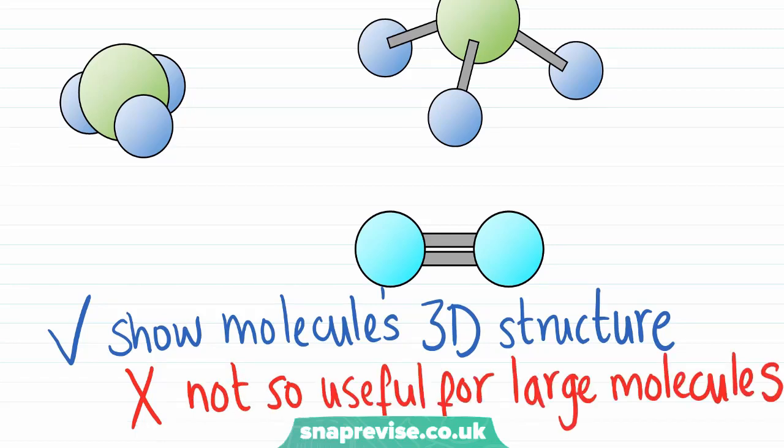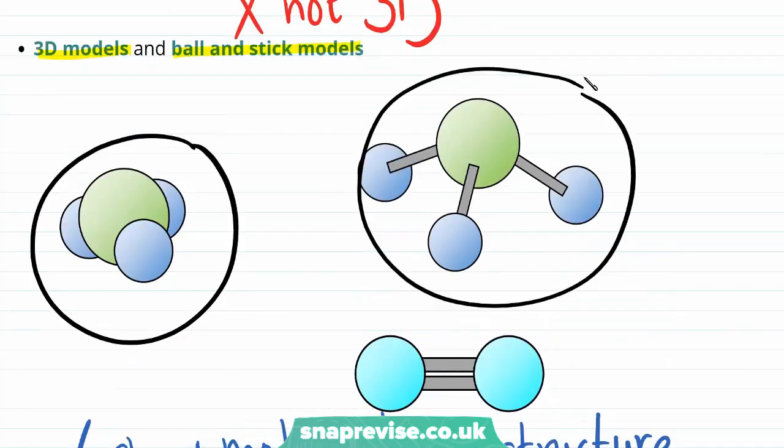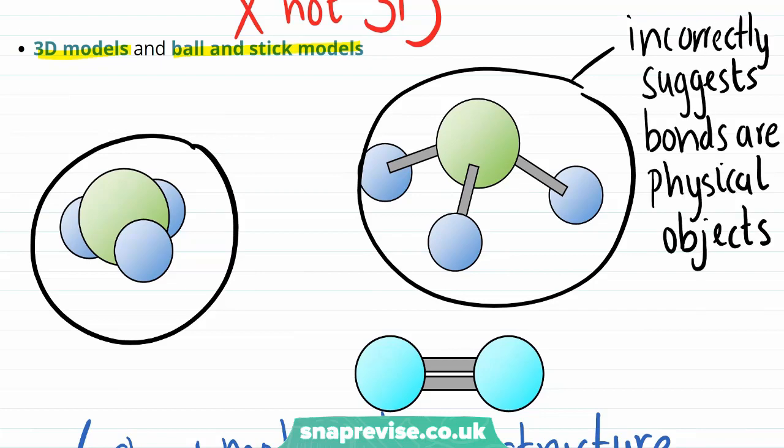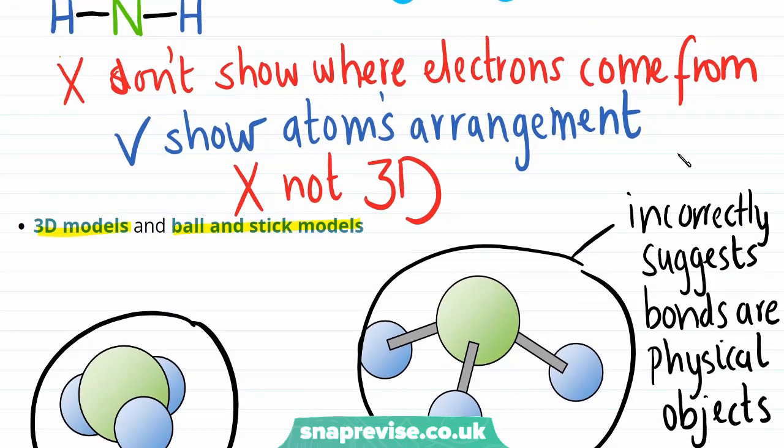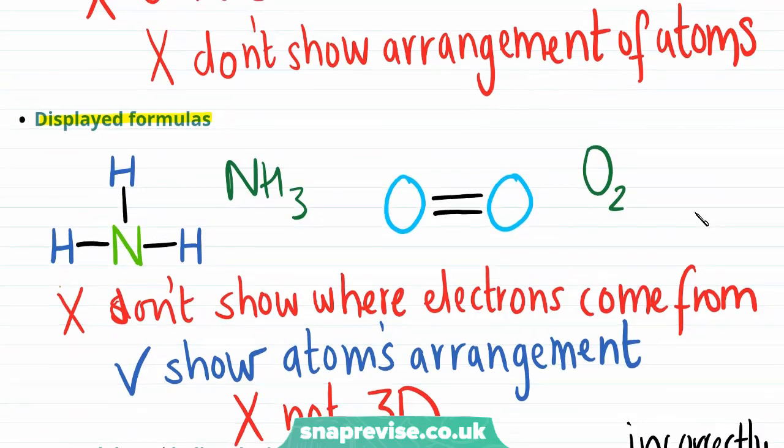Another point to note is that bonds are actually just forces and are not physical objects. Therefore, this representation is better than this representation, as this one incorrectly suggests that bonds are physical objects. This reasoning can also be applied as a disadvantage of a displayed formula.